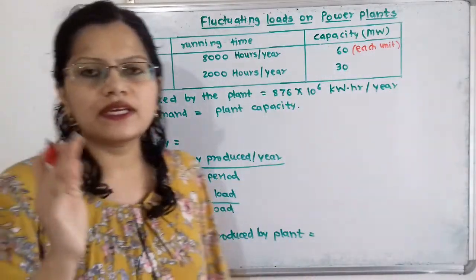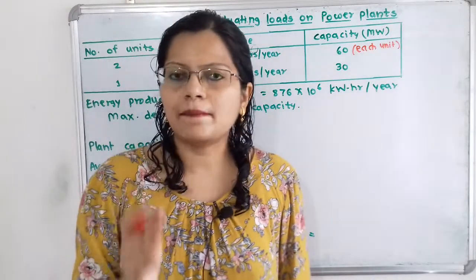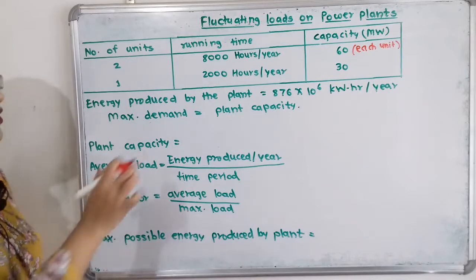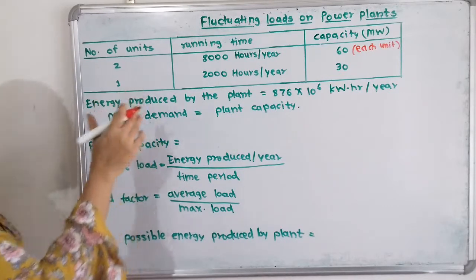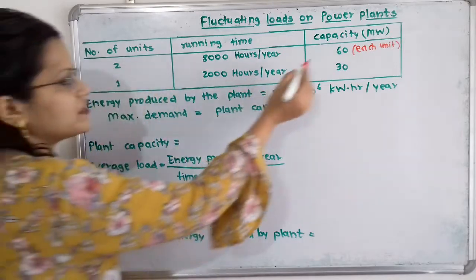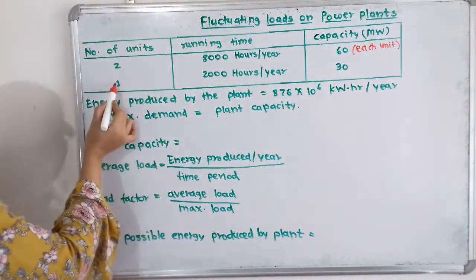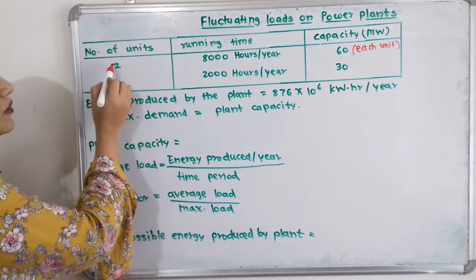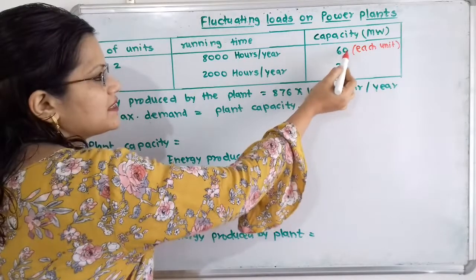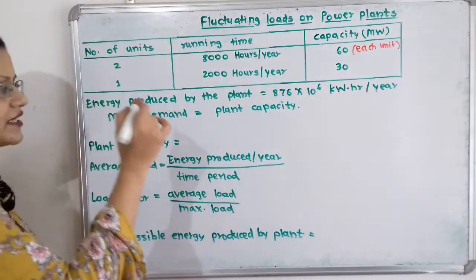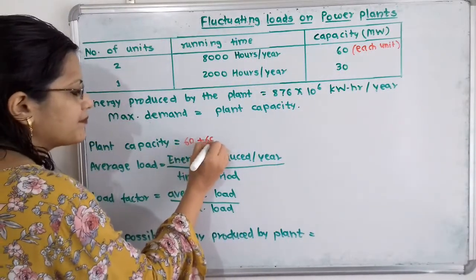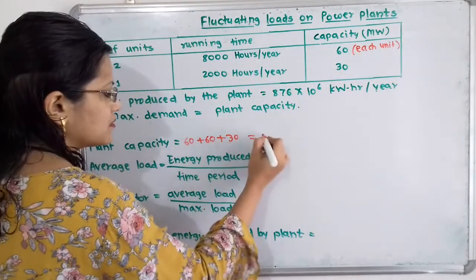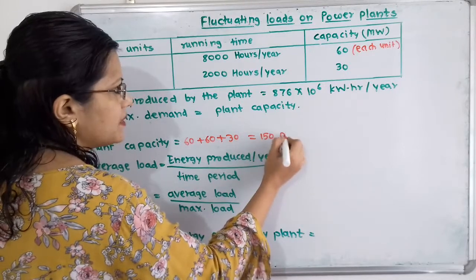Now, we have to find out the plant load factor and plant use factor. So, how to find out the plant capacity? The plant capacity is the combination of 2 units of 60 MW each and 1 unit of 30 MW. So, plant capacity = 60 + 60 + 30 = 150 MW.